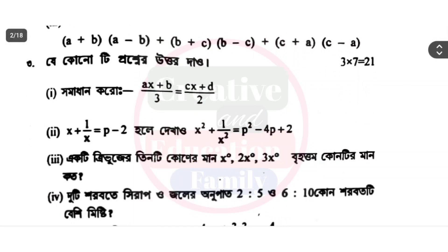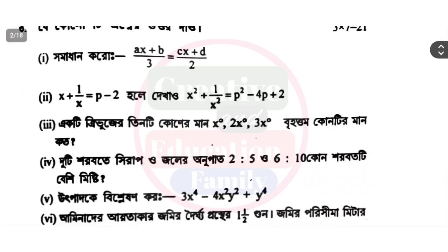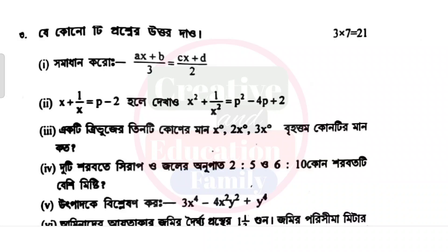Given, solve for the first condition: x plus b by 3 is equal to cx plus d by 2. x plus 1 by x minus 1, p minus 2. Show that x square plus 1 by x square minus 1. p square minus 4p plus 21: find three roots whose values are x degrees, 2s degrees, 3x degrees.